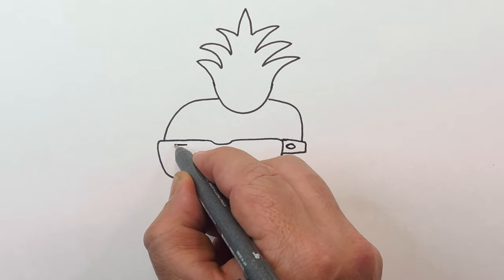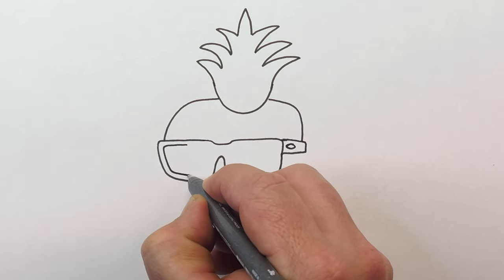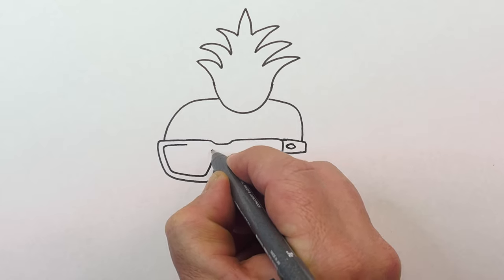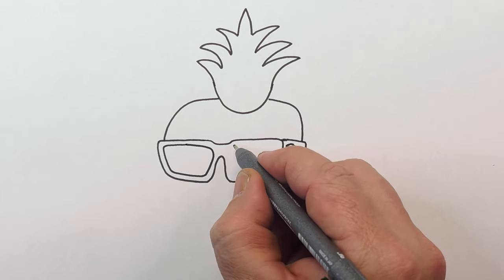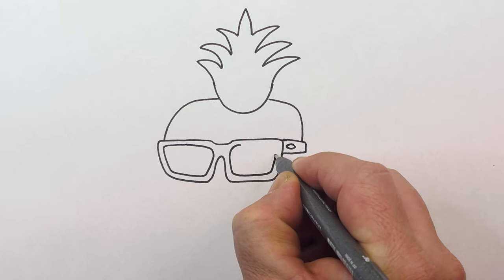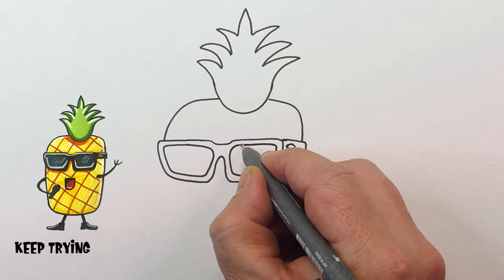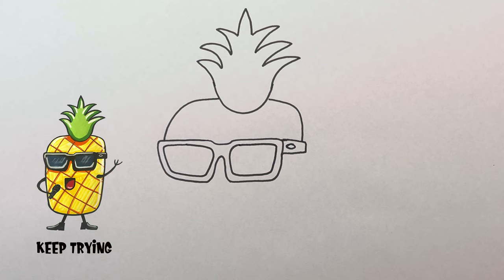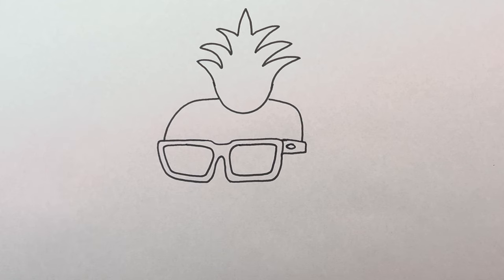Now let's draw the lenses of the glasses. Going to put another shape or line in like that. Now let's draw the other lens. I'm sure you're doing a great job at home. Remember to keep trying. The more practice you do with your drawings the better you're going to get.